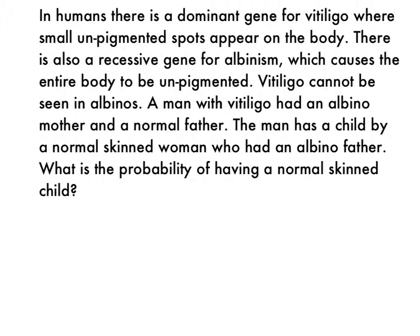Question number nine on genetics problems one is a tricky one. It says in humans there's a dominant gene for vitiligo, where small unpigmented spots appear on the body. There's also a recessive gene for albinism, which causes the entire body to be unpigmented. Vitiligo cannot be seen in albinos. A man with vitiligo had an albino mother and a normal father. The man has a child by a normal-skinned woman who had an albino father. What is the probability of having a normal-skinned child? The first thing to do is figure out the genotypes of these individuals.